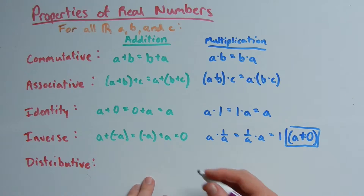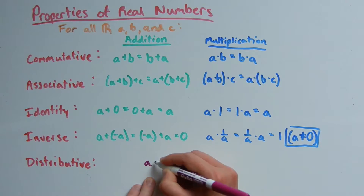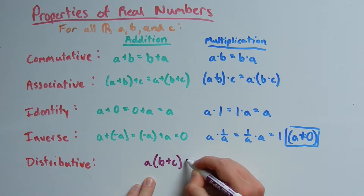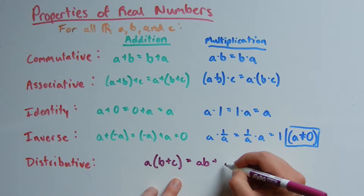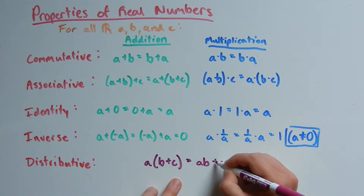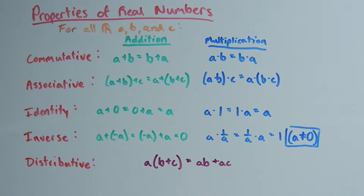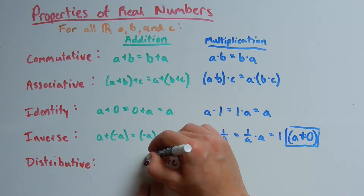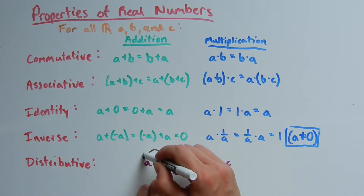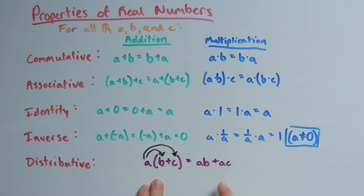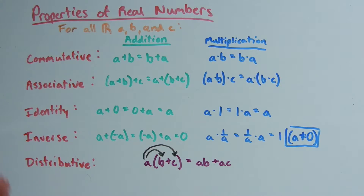Now we're going to go over the distributive property. The distributive property contains both addition and multiplication, so it doesn't go into any particular group. It says a times (b plus c) equals ab plus ac. When explaining the distributive property, it's helpful to draw arrows — the a is multiplied to the b, and that's added to the a which is multiplied to the c. That's a review of the properties of real numbers.